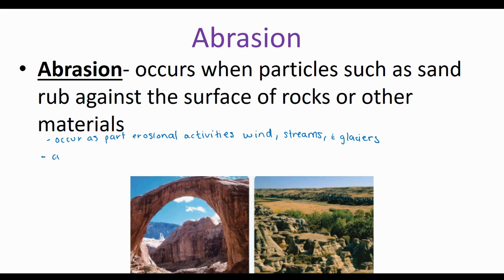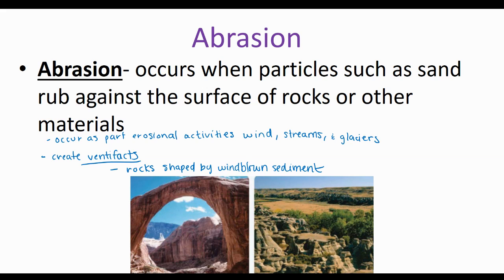This is going to create ventifacts, and ventifacts are rocks that have been shaped by wind-blown sediment. In this picture we have arches, pillars, and cap rocks. These forms are going to form in different types of environments, but they are most commonly found in arid climates where wind is the dominant erosional force.